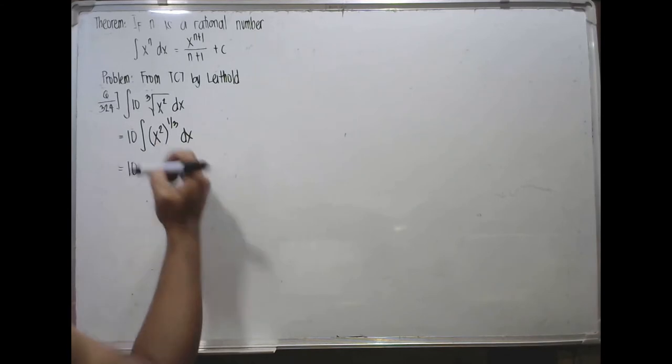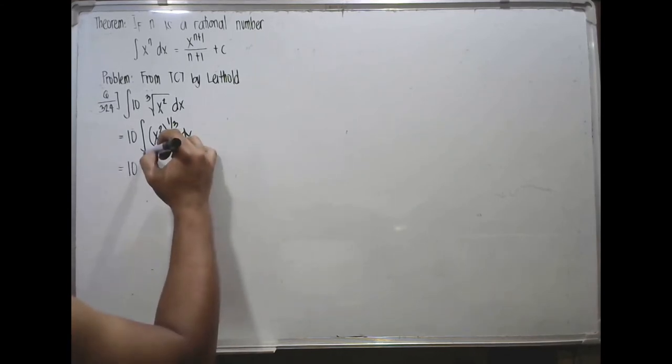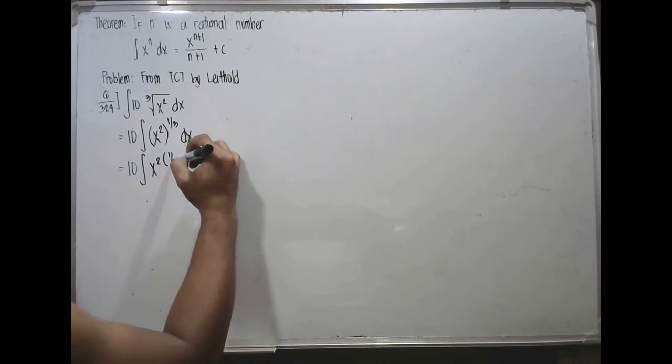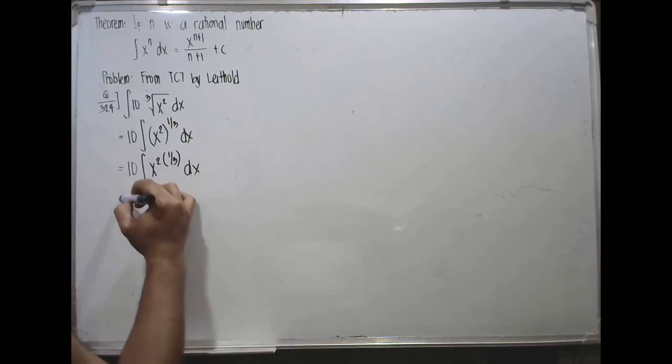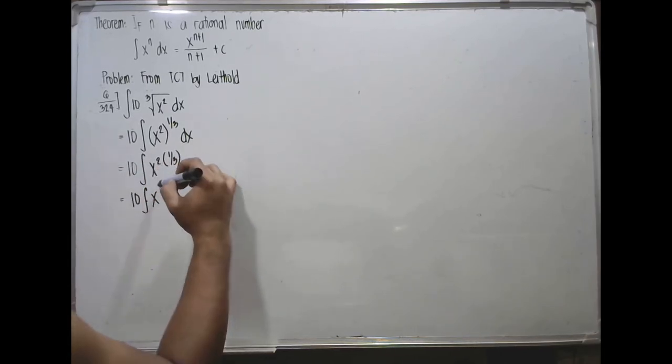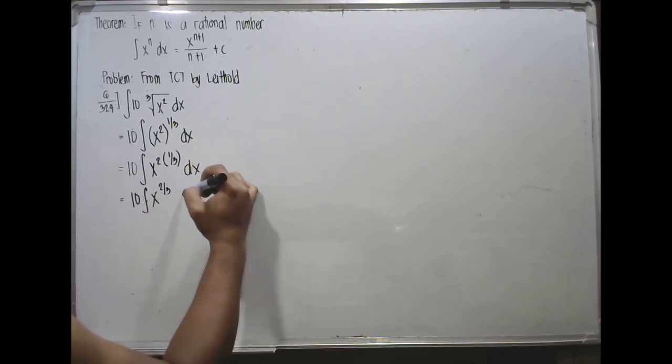Copy the constant. Integral, law of exponents for powers, so that would be x, 2 times 1 third. This is from your algebra dx. So you have 10, integral of x, 2 times 1 third, so you have 2 thirds dx.